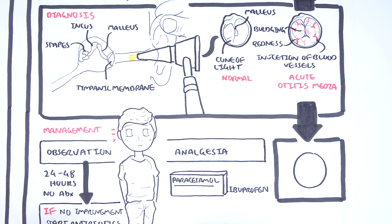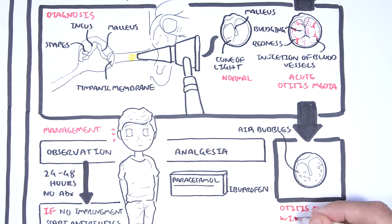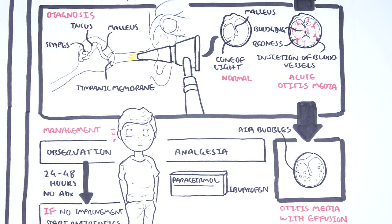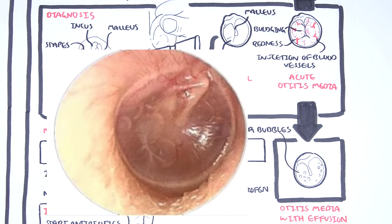When acute otitis media resolves, it then really becomes otitis media with effusion, usually. In otitis media with effusion, otoscopic findings include visualization of air fluid levels with bulging and maybe decreased mobility of the tympanic membrane. There is no evidence of a red sore eardrum. Here is an image of an otoscope visualization of someone who has otitis media with effusion. Note the fluid behind the tympanic membrane.